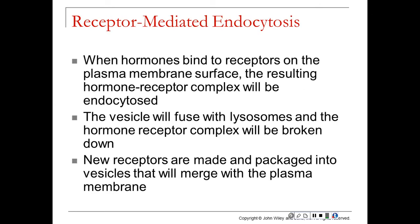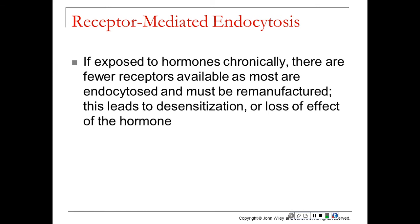Receptor-mediated endocytosis is when hormones bind to receptors on the plasma membrane, resulting in a hormone-receptor complex. The vesicle can then fuse with the lysosome and the hormone-receptor complex is broken down. New receptors are made, packaged, and fused with the plasma membrane to reestablish that receptor site. If that cell is exposed to hormones repeatedly or over a long period of time, there are fewer receptors available, and your body becomes desensitized — that target tissue has a loss of effect of that hormone, meaning the cell will start to ignore what that hormone is signaling.